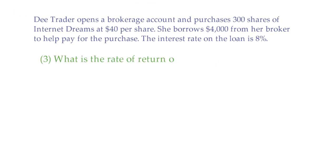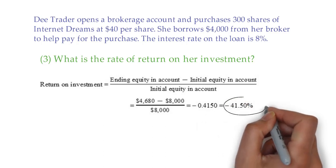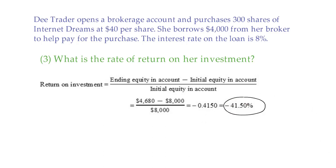Question number three: what is the rate of return on her investment? The rate of return is calculated based on the following formula: ending equity minus initial equity divided by initial equity. So, 4,680 minus 8,000 divided by 8,000 gives you negative 41.5%. The investor has a loss of 41.5% on her margin investment.